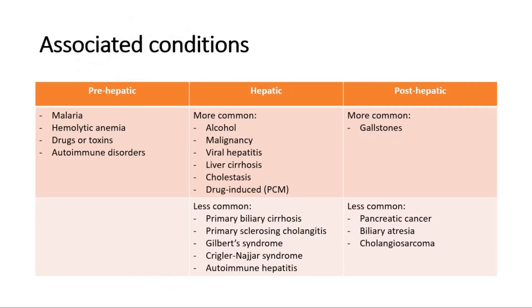There are a lot of conditions associated with jaundice, and they can be divided into pre-hepatic, hepatic, and post-hepatic causes. Pre-hepatic causes are the causes that occur before the liver, such as hemolysis due to malaria, hemolytic anemia, drugs or toxins, and autoimmune disorders.